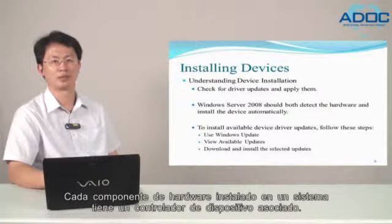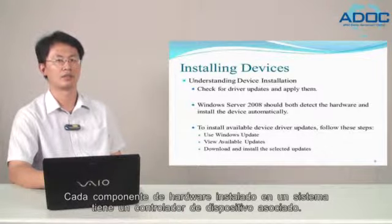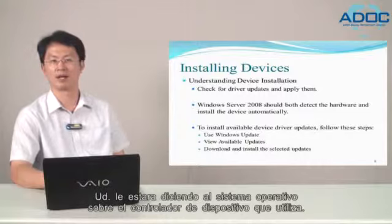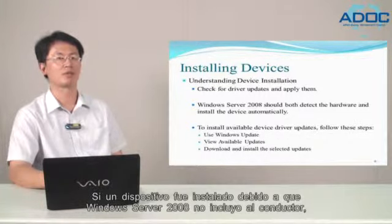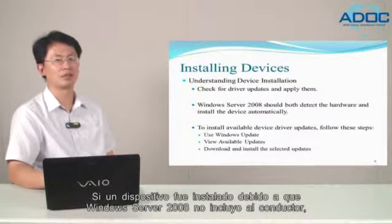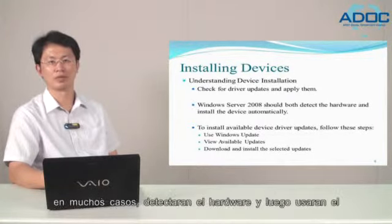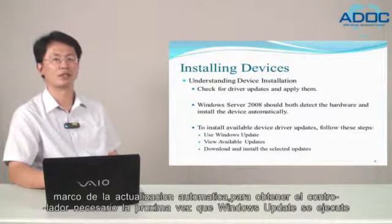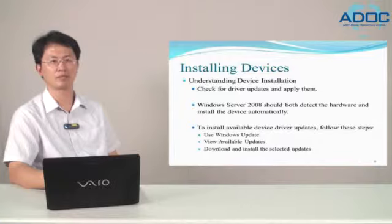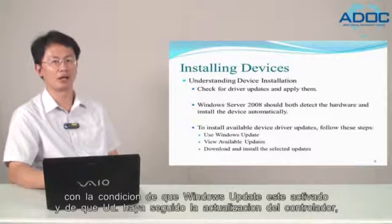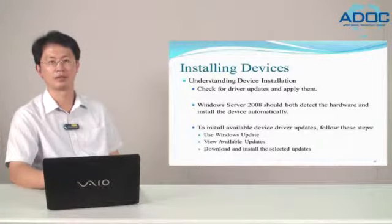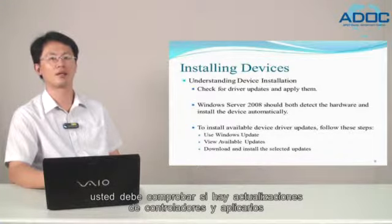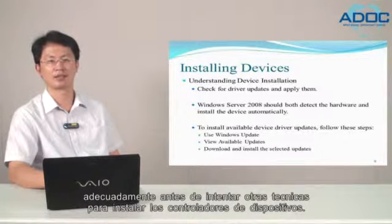Every hardware component installed on a system has an associated device driver. When you install a hardware component through the operating system, you tell the OS about the device driver it uses. If a device wasn't installed because Windows Server 2008 didn't include the drivers, the built-in hardware diagnostics will in many cases detect the hardware and use the automatic update framework to retrieve the required driver the next time Windows Update runs, provided that Windows Update is enabled and you allow driver updating. After updating or installing the operating system, you should check for driver updates and apply them as appropriate before trying other techniques.